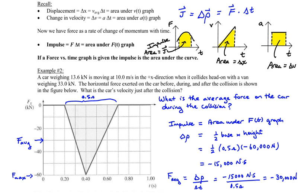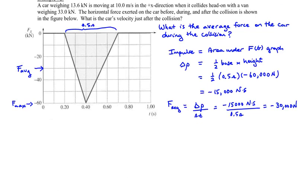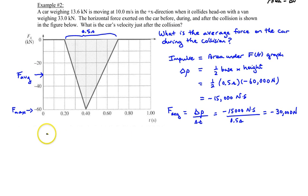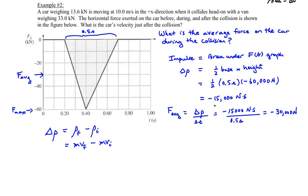Now let's proceed to the main question: what is the car's velocity just after the collision? We need to link this impulse with the initial speed and mass of the car. Using the definition of impulse as change in momentum — final momentum minus initial momentum, or mass times final velocity minus mass times initial velocity — and noting that the force exerted by the van is in the negative x direction, the impulse is negative 15,000 newton-seconds.